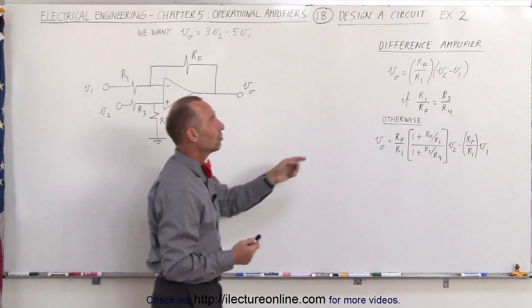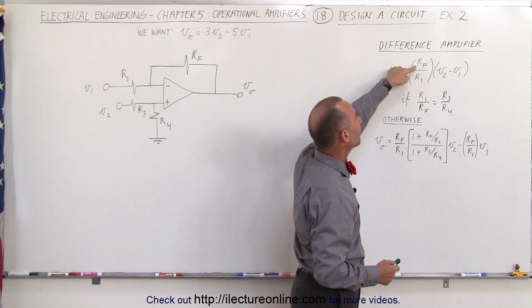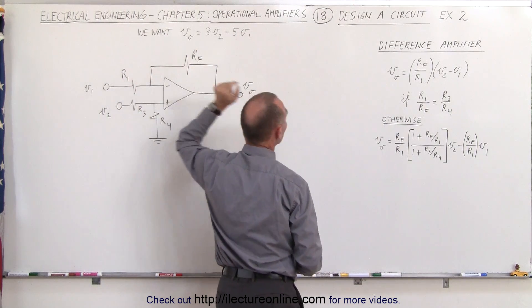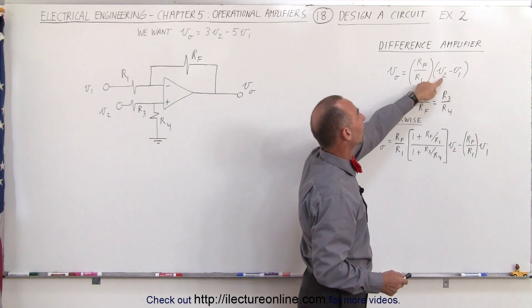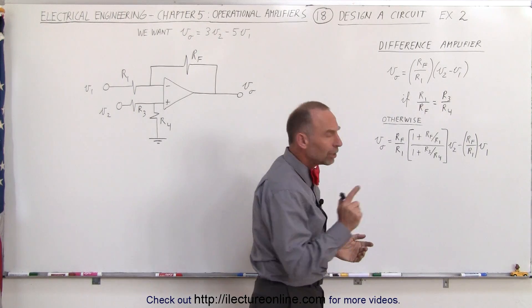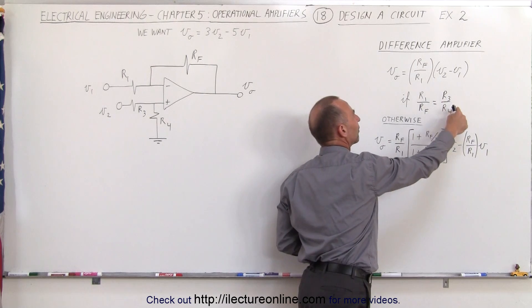The difference amplifier equation can be found like this: V output is equal to the ratio of the feedback resistor divided by R1, it's this resistor divided by that resistor, times the difference between V2 minus V1. But that's only true if the ratio of R1 to RF is equal to R3 divided by R4.